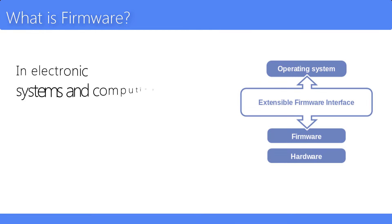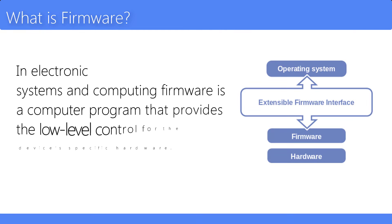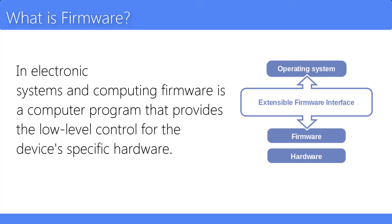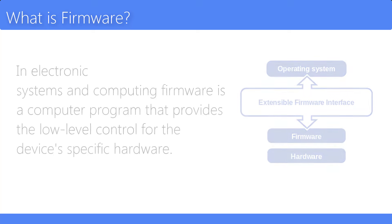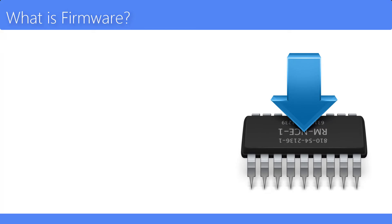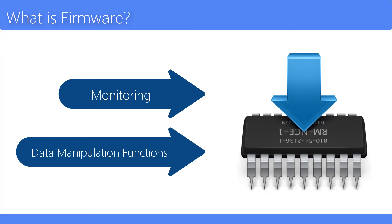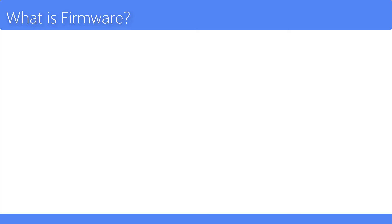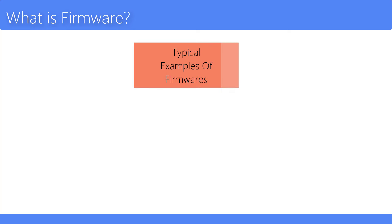What is firmware? In electronic systems and computing, firmware is a computer program that provides low-level control for device-specific hardware. Firmware can either provide a standardized operating environment for more complex software, or for less complex devices, act as the device's complete operating system, performing all control, monitoring, and data manipulation functions.